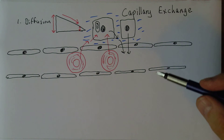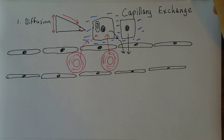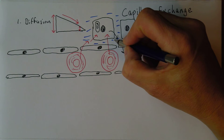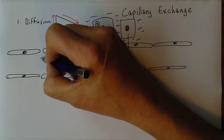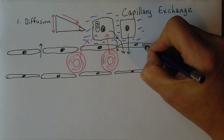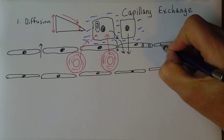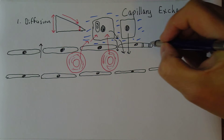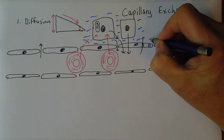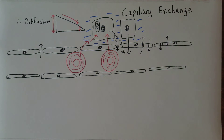There are intercellular clefts between the individual cells, so some diffusion will take place through these intercellular clefts, making it a little bit easier for substances to get in and out. Also, in some tissues, cells have fenestrations — these are holes through the cell. And if there are holes through the cell, that will also make it easier for substances to diffuse in and out of the blood, between the blood and the interstitial fluid.